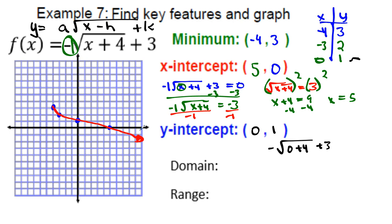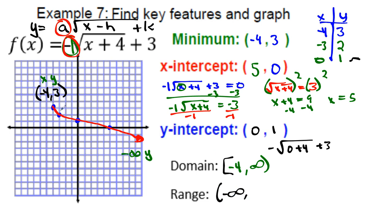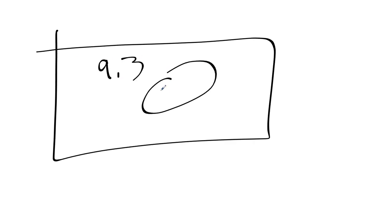For domain and range: the domain always goes from the x-value of the vertex to positive infinity, so [−4, +∞). For the range, the y-value of the vertex is 3, but the graph opens down, so it goes from negative infinity up to 3: (−∞, 3]. That's everything you need to know about graphing square roots — now go do the practice. Be amazing, have a great day!